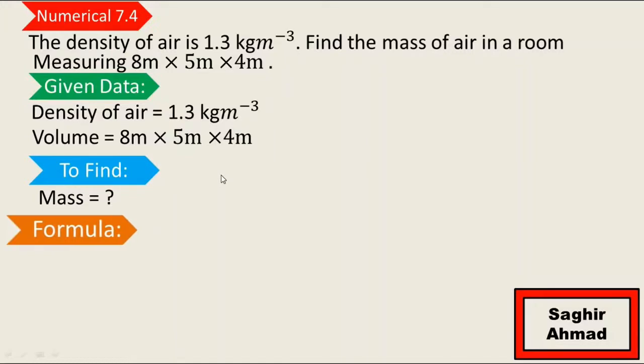Now we know the formula for mass. First of all we write the formula of density. We know that density is equal to mass over volume. From here we can find the formula of mass. Volume is divided here, so it will be multiplied on the left side of the equal sign.